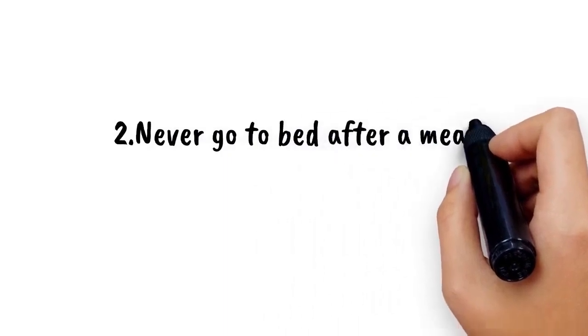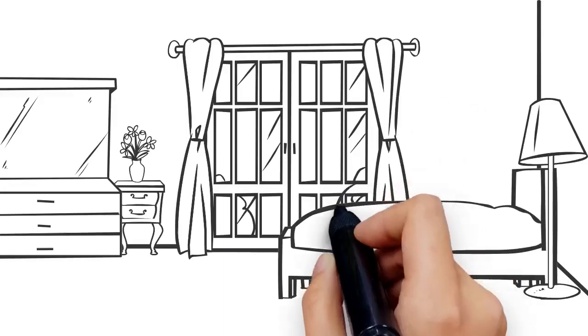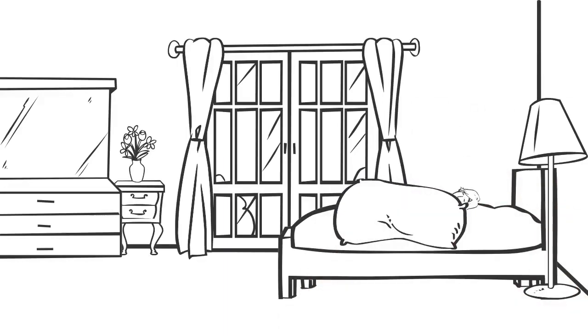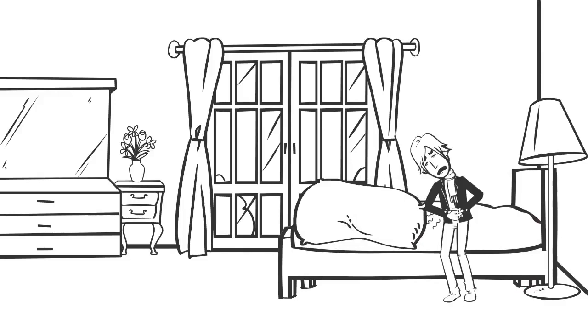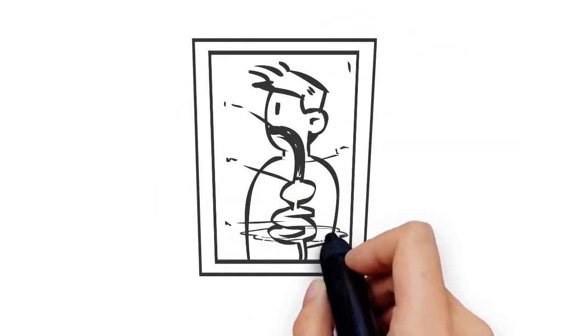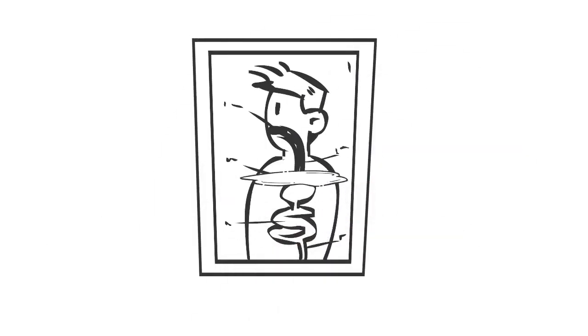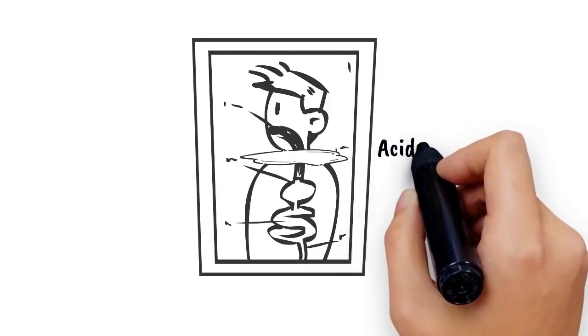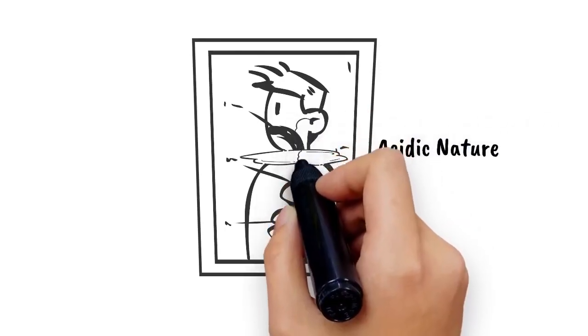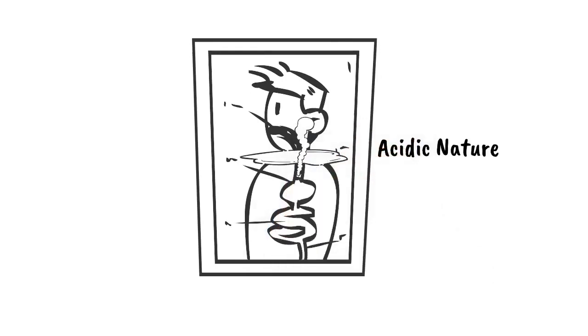Number 2: Never go to bed after a meal. Lying down for a nap or sleeping after a meal is the favorite thing of millions of people, but this habit is not healthy at all. When we lie down, digestive juices from your stomach flow back to the esophagus because of gravitational force. Due to its acidic nature, it can burn the inner layer of the esophagus, causing acid reflux.